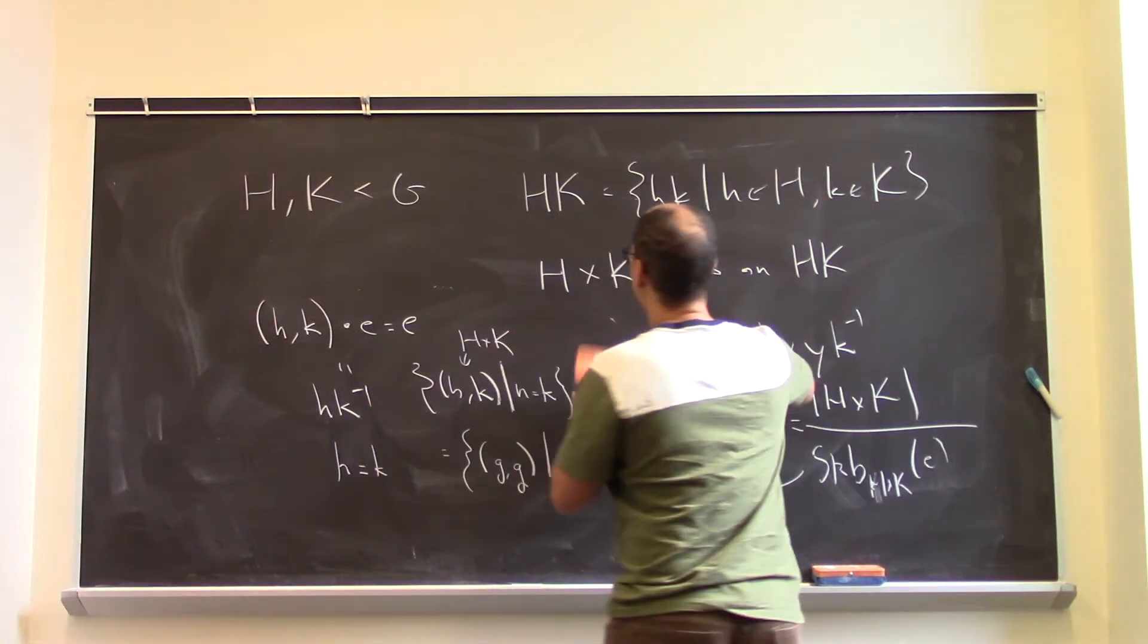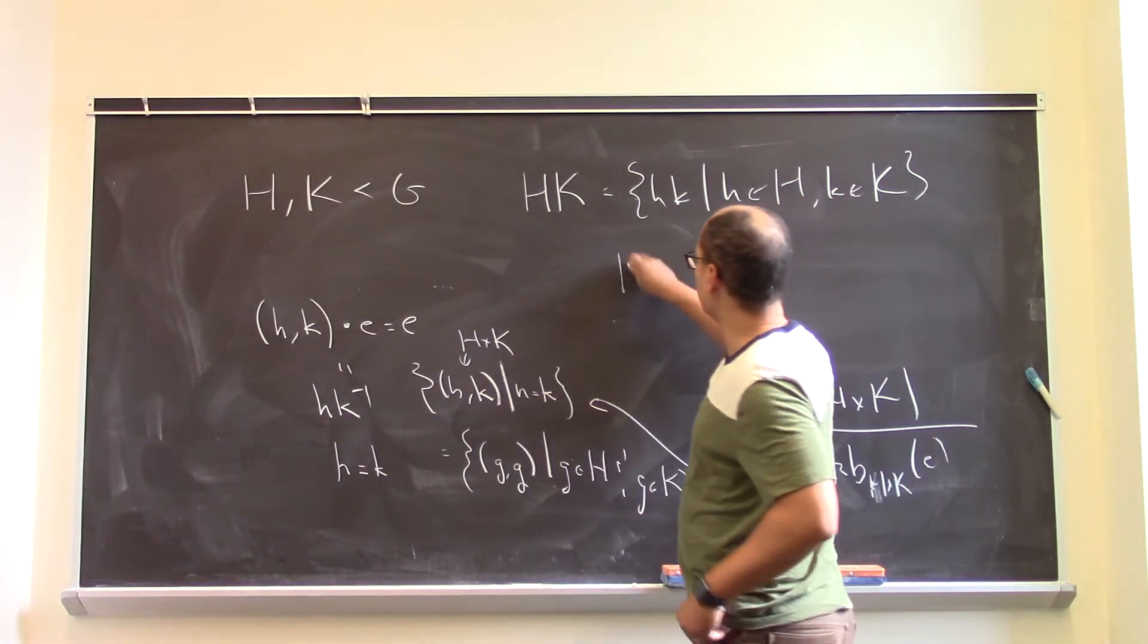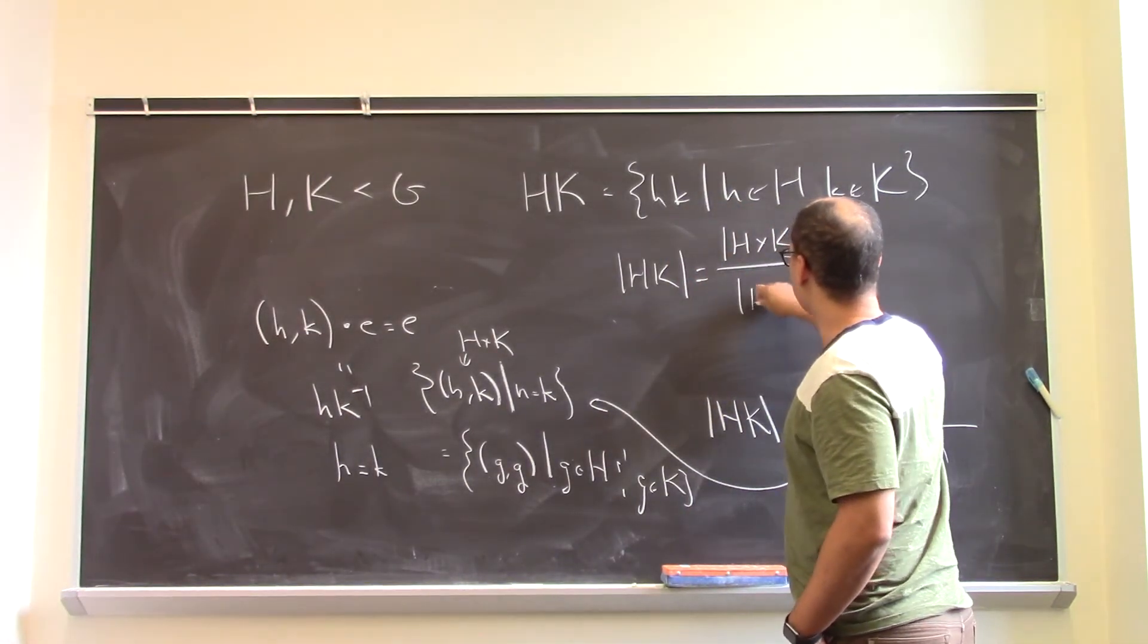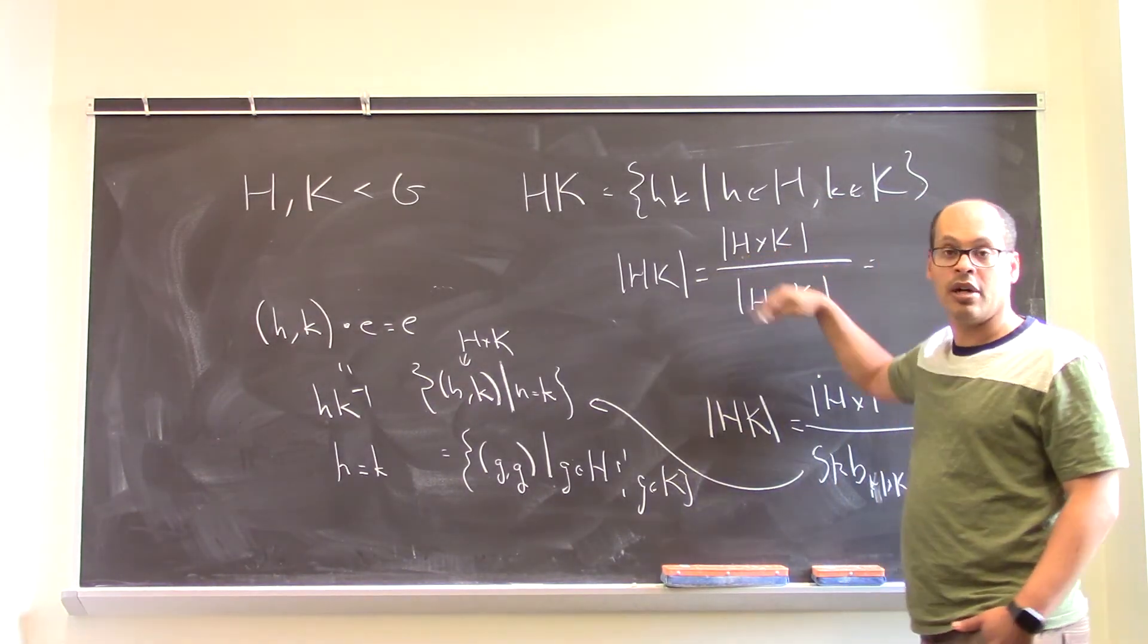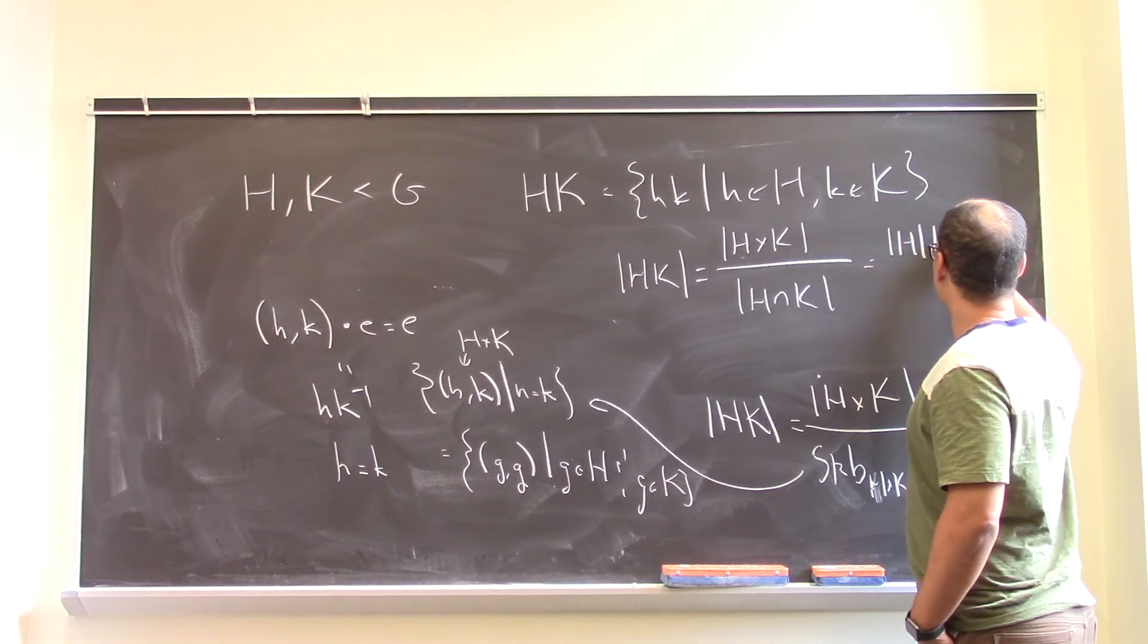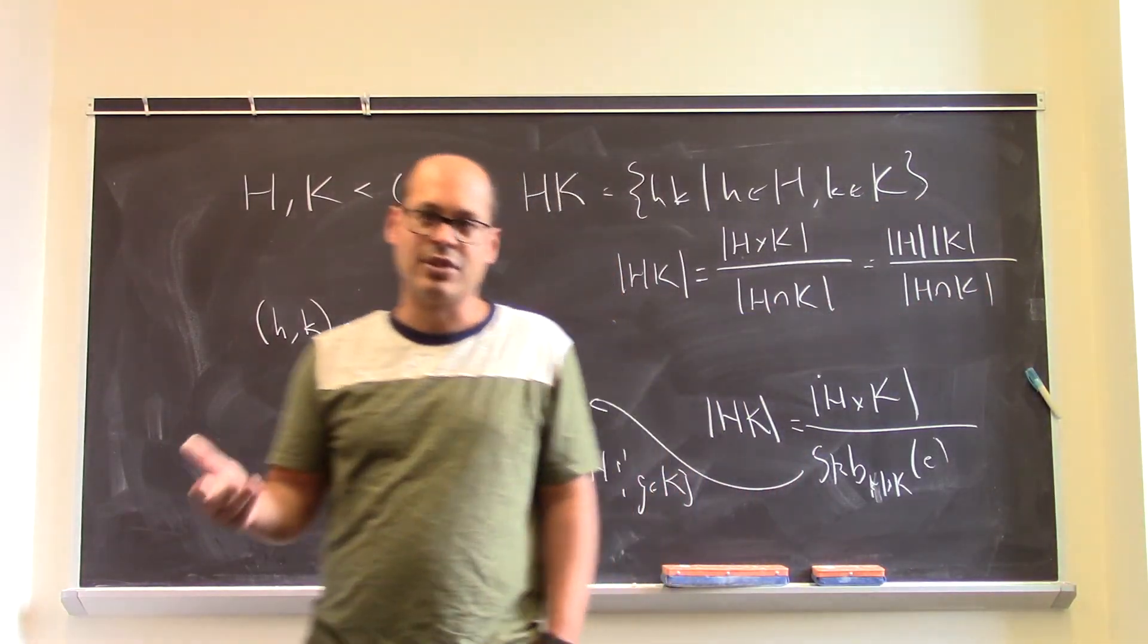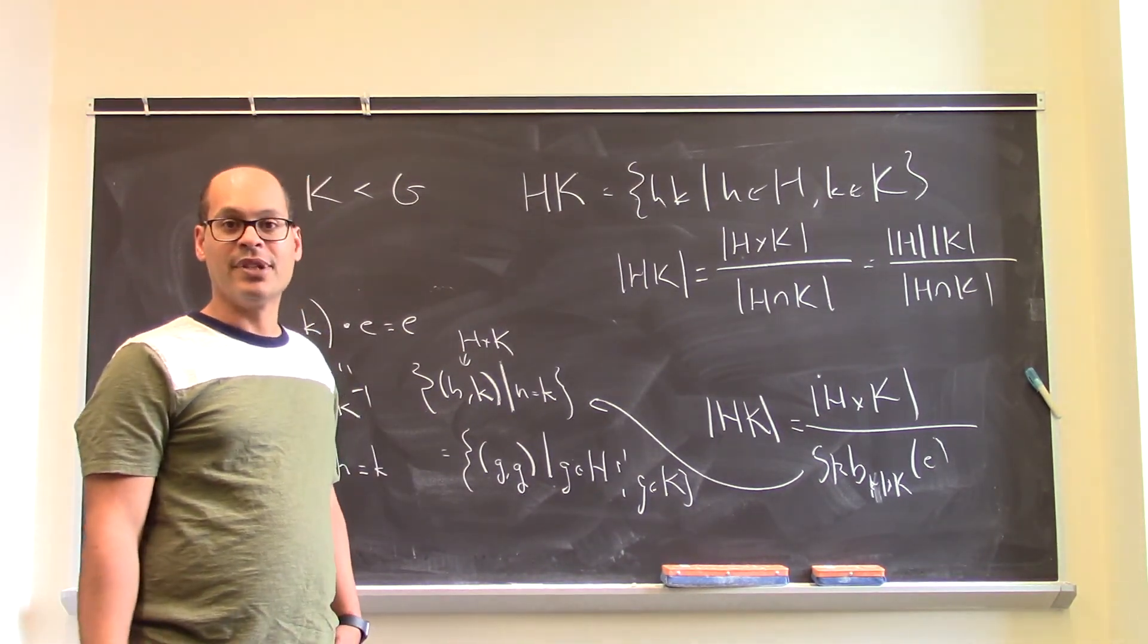So, altogether, what do we have? We have that the order of HK is the order of H cross K divided by the order of the intersection. Of course, the order of the product of two sets is the product of the orders. And so you get this formula for the order of the product. I'm sure there's a lot of easier ways to do this, but using the orbit stabilizer theorem is always fun. So, there's that.